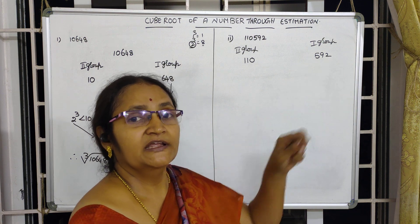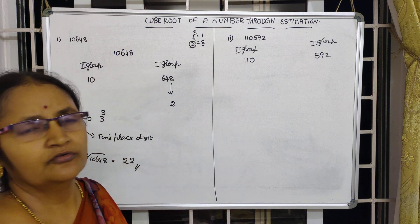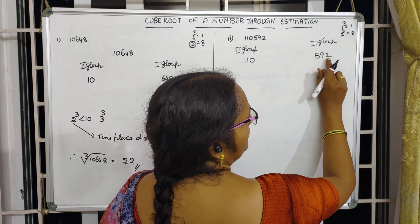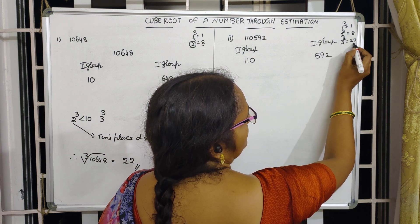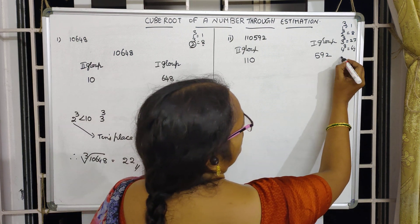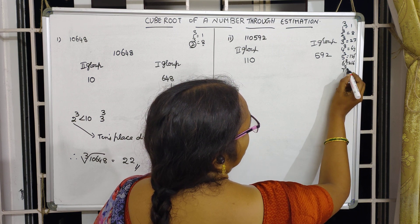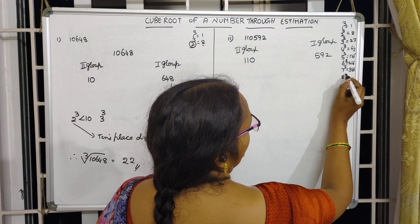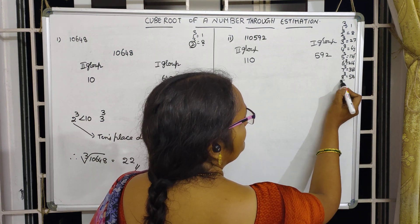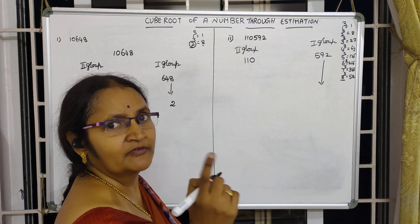In this number, the ones place digit is 2. We need to find which number's cube ends in 2. One cube ends in 1, two cube ends in 8, three cube ends in 7, four cube ends in 4, five cube ends in 5, six cube — no, seven cube is 343 ending in 3 — no. Eight cube is 512, ending with 2. So the ones place digit of the answer is 8.